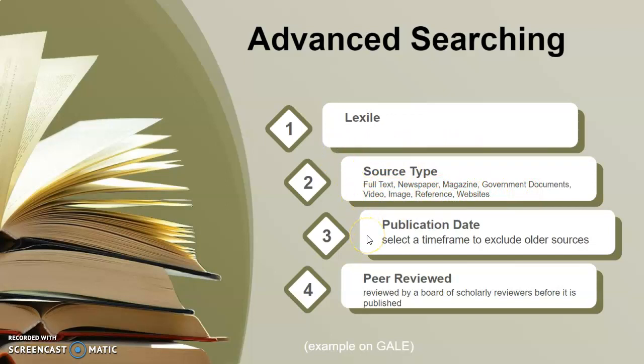You can narrow results down by publication date. For example, if you're doing a paper about cell phone usage, you are not going to want articles from the year 2000, because cell phone technology has changed a lot from 2000 to 2020.